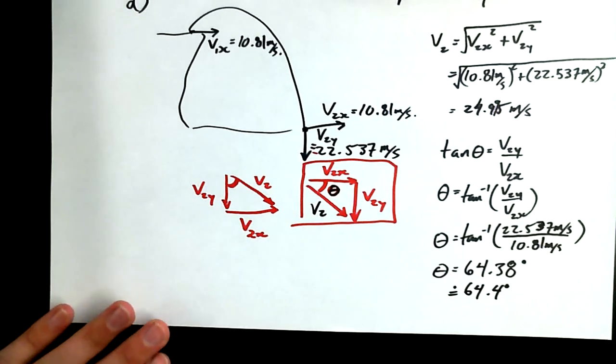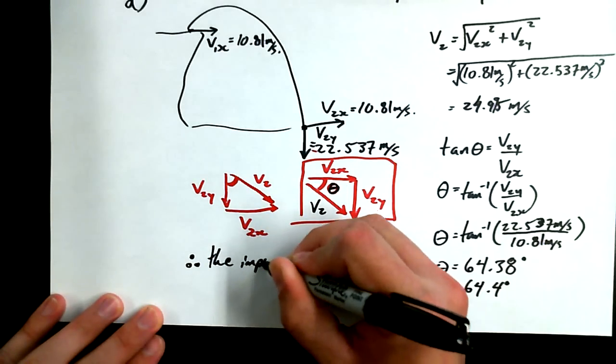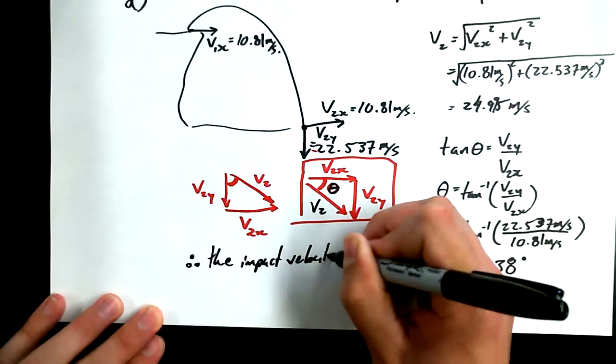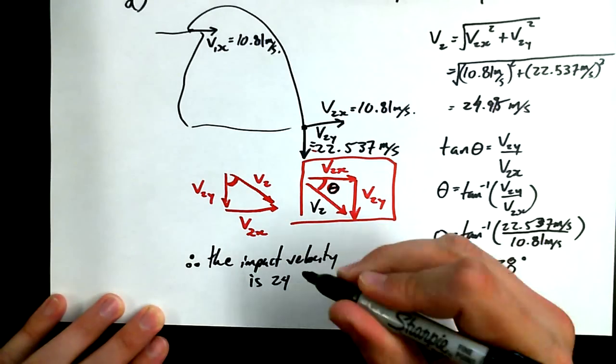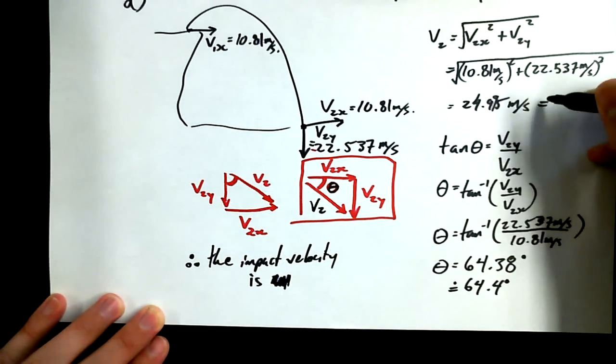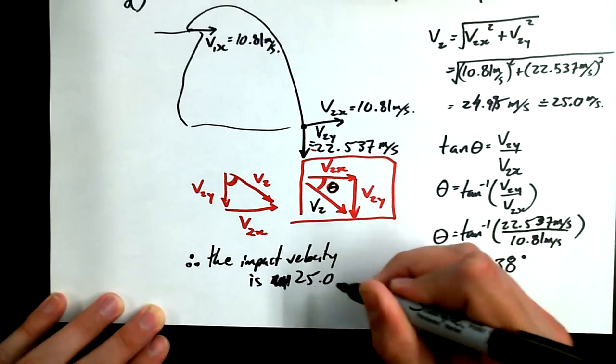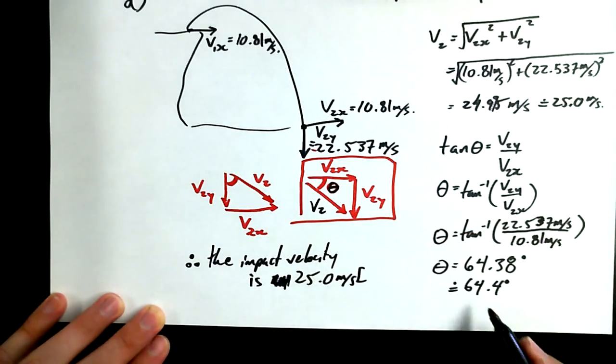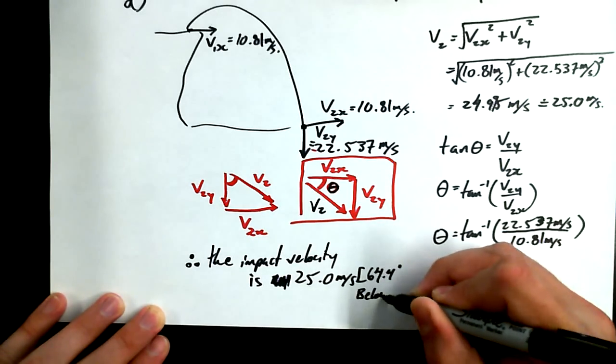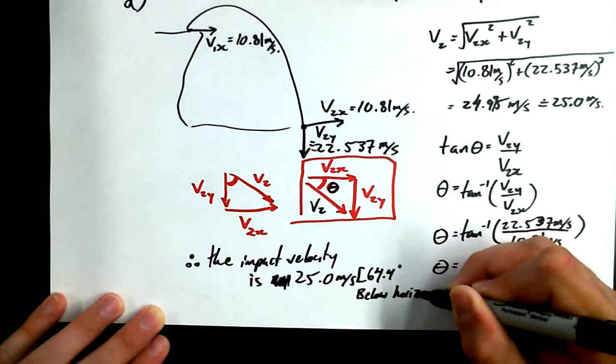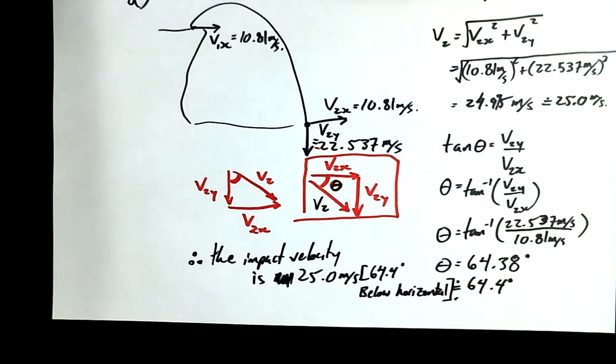Now, if I want to find the final impact velocity, which is what was actually asked of me, therefore, the impact velocity is... We said 24.03 sig digs. It's going to be approximately equal to 25.0 meters per second. Sorry, we should have done that earlier. It is 25.0 meters per second, 64.4 degrees below horizontal. Not a problem.